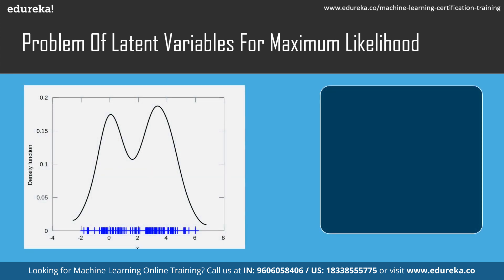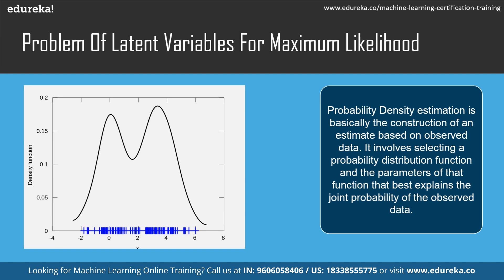Maximum likelihood estimation is the method of estimating the parameters of a probability distribution by maximizing the likelihood function in order to make the observed data most probable for the statistical model. However, it assumes the data is fully observed and that all variables relevant to the model are present. In some cases, relevant variables may remain hidden — these unobserved or hidden variables are also known as latent variables.